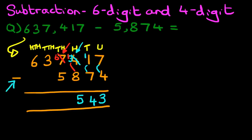Now we're going to do the thousands column. We've got 6 minus 5. What is 6 minus 5? That's right, it is 1. The ten thousands column: 3 minus 0 is 3. And the hundred thousands: 6 minus 0 is 6.